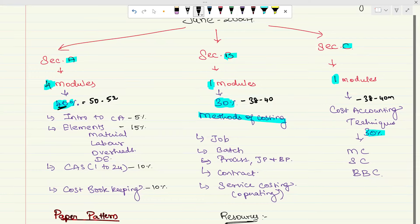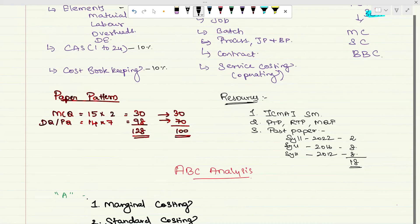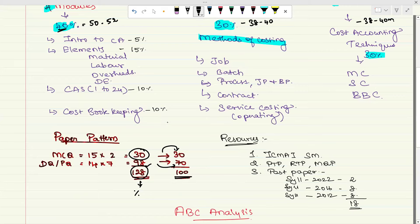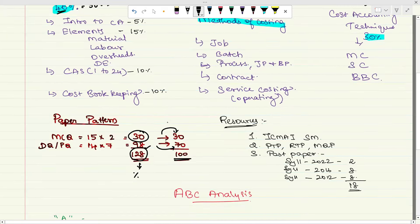As usual, the paper is going to be 30 plus marks MCQs, 98 marks will be descriptive choice, total 128 marks. You need to attend 30 compulsorily MCQs and then 70 marks you need to write, total 100 marks.